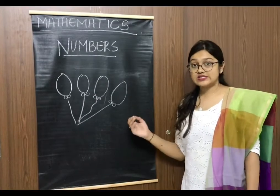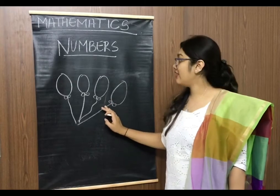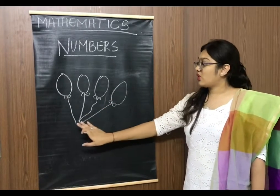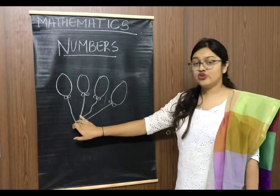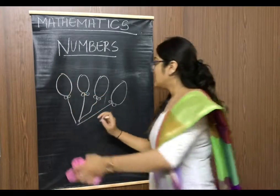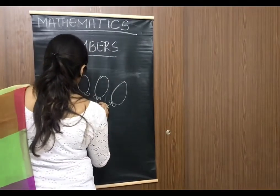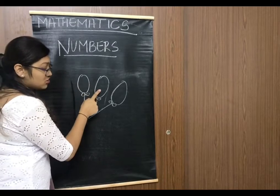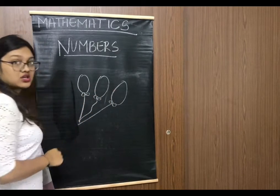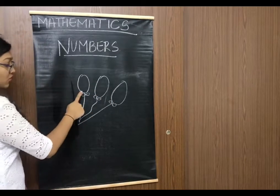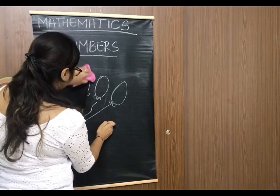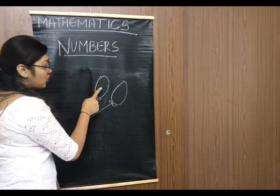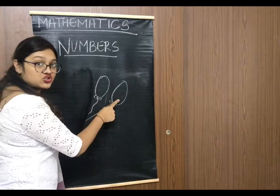So students, here I have 4 balloons. One balloon flew away. So how many balloons are left? 1, 2, 3. One more balloon flew away. How many balloons are left? 1, 2.